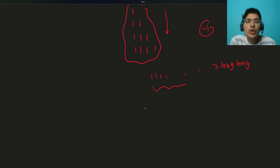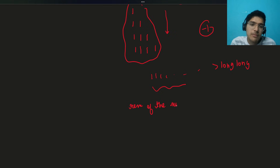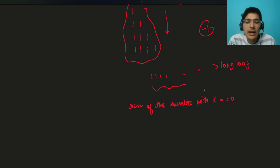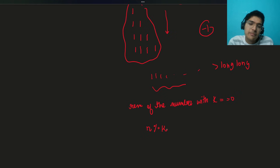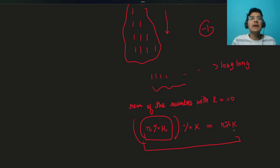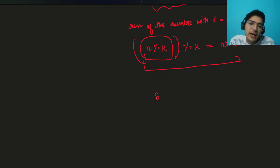In these kinds of problems involving modulo, what you're concerned with is: the remainder of the number with k should be zero. Modular arithmetic tells us that if you take a repetitive modulus, the mod does not change. For example, 8 modulo 2 is 0, and then 0 modulo 2 is again 0. This is a very important property.